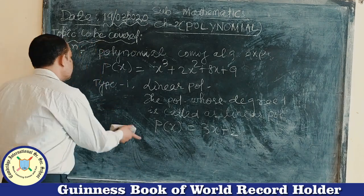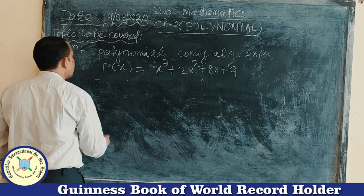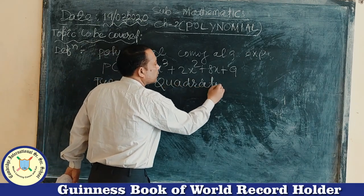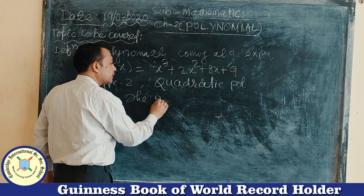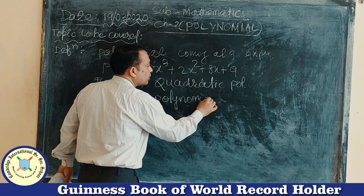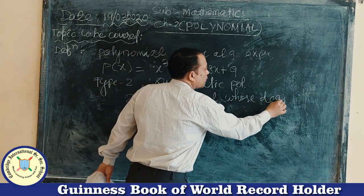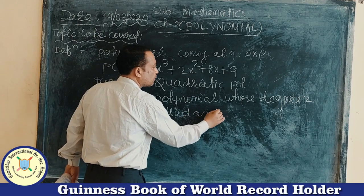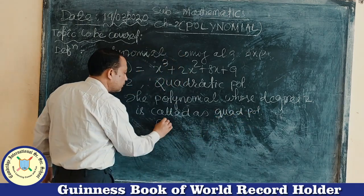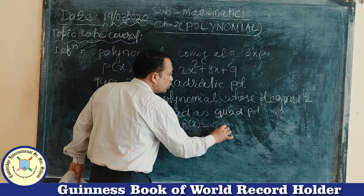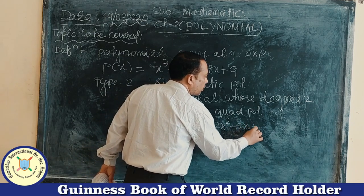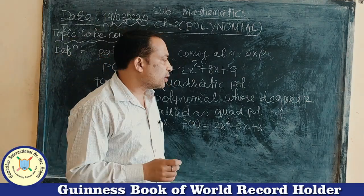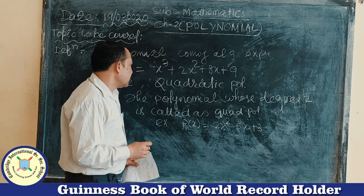Next, Type 2: Quadratic Polynomial. The polynomial whose degree is 2 is called a quadratic polynomial. For example, P(x) = 2x² − 5x + 3. This is called a quadratic polynomial. When this polynomial is solved, we get 2 zeros.